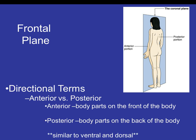Continuing with frontal plane directional terms, we have anterior and posterior. These are very similar to ventral and dorsal. Anterior refers to body parts on the front of the body, and posterior refers to parts on the back. So anterior and ventral both refer to the front, and posterior and dorsal both refer to the back side of the body.